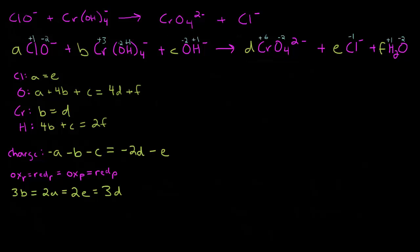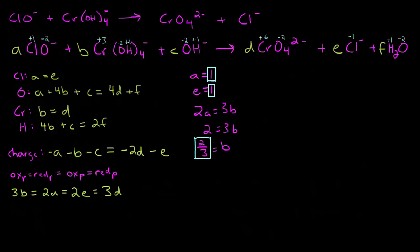Now we have our equations and should be able to solve everything. Let's start by letting A equal one arbitrarily. From the chlorine equation, E also equals one. Going to the redox equations to solve for B and D: 2A equals 3B. If A is one, then 2 equals 3B, so B equals two thirds. From the chromium equation, B equals D, so D is also two thirds.